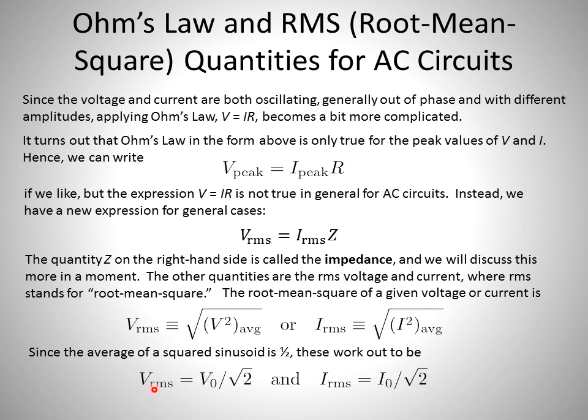And the RMS is equal to, really, the peak voltage that we get, divided by the square root of two. Same thing for the current. The RMS current is equal to the peak current, divided by square root of two.